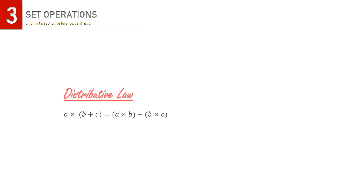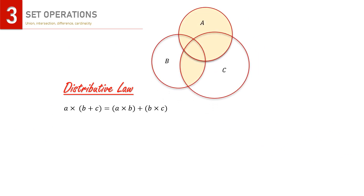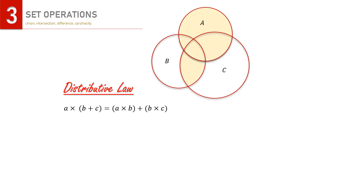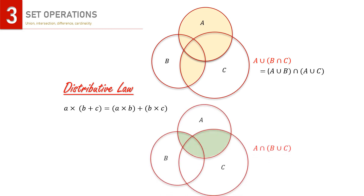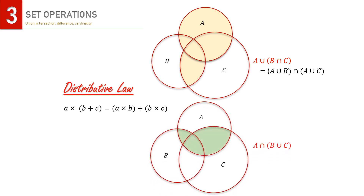Lastly, we have the distributive law in algebraic operations. Looking at this Venn diagram, it results from set operations shown here. Using the distributive law, the operations can be expressed accordingly. Similarly, we have another Venn diagram representing another operation, and using the distributive law, that operation can also be expressed in its distributed form.